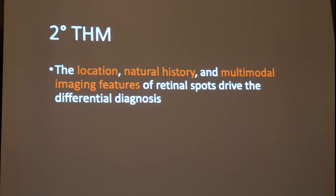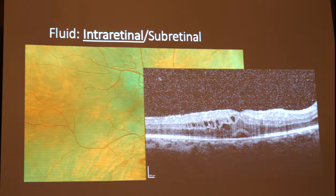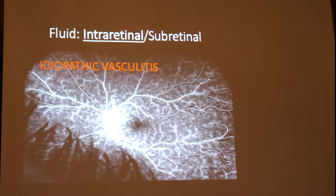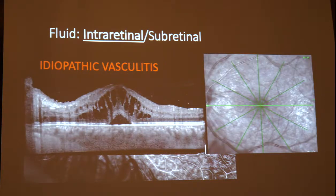Now let's move to the third part of this talk, about fluid. Patients with retinal inflammation most often present with intraretinal fluid, usually in a cystoid configuration or neurosensory detachment, associated with late leakage in the macula on fluorescein angiography. This is a case of Whipple disease. Another patient with diffuse vasculitis showing a fern-like pattern had a cystoid macular edema on OCT that regressed with anti-inflammatory treatment.